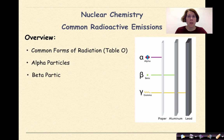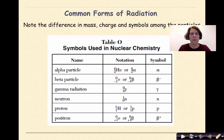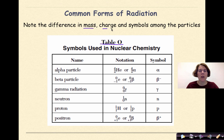We'll be covering alpha particles, beta particles, positron particles, and finally gamma radiation. The thing we want to look at is the difference in mass, charge, and the symbols used among these particles.